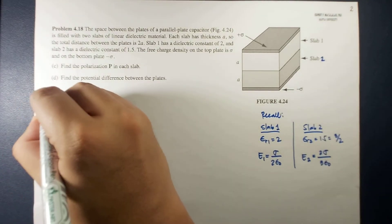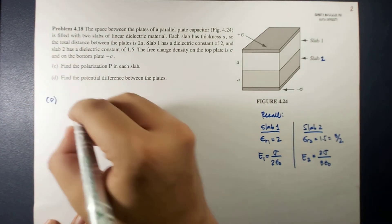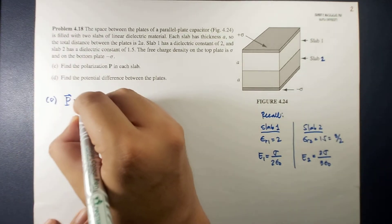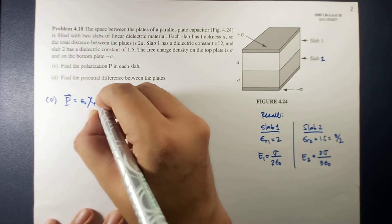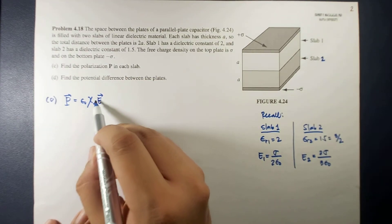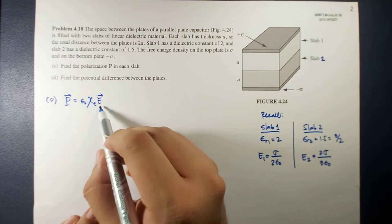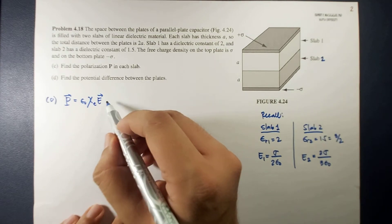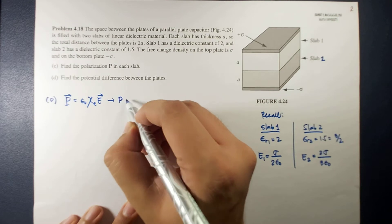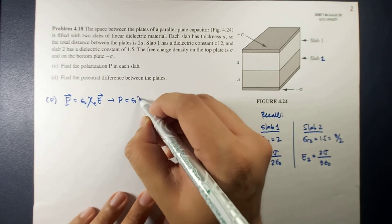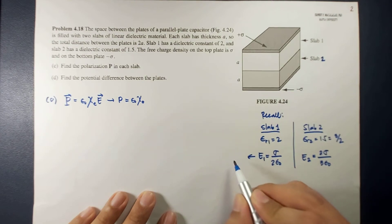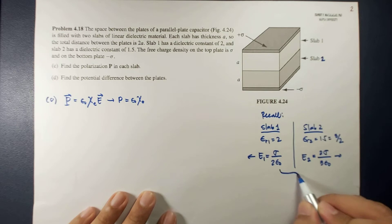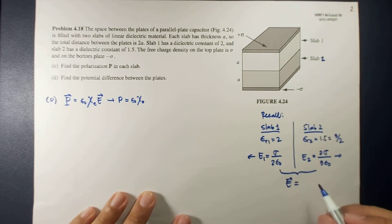Now if we want to find the polarization, remember that polarization is equal to ε₀ times χ_E times E, where ε₀ is the permittivity of free space, χ is the electric susceptibility, and E is the electric field in that region. In scalar form, P equals ε₀·χ_E·E. The general expression for the electric field is σ over ε_r·ε₀.